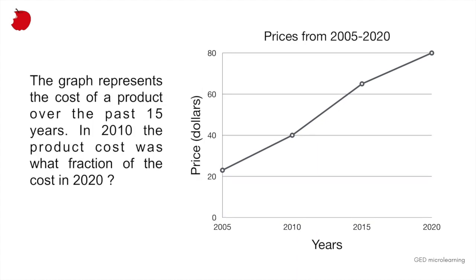Alright, so the question is in 2010, the product cost was what fraction of the cost in 2020. So here what you have to do is we're just going to focus on those two dates. So the price in 2020, which you can see is $80, if you follow it to the left to the axis on the left, and then if you go to the year 2010 and then you follow that line to the left, it was $40 in 2010.